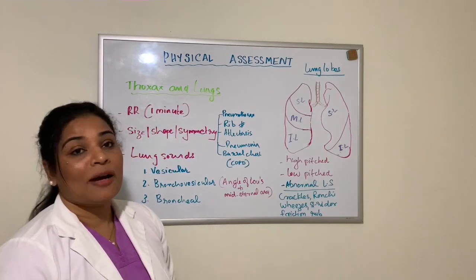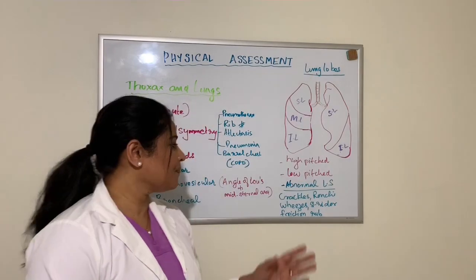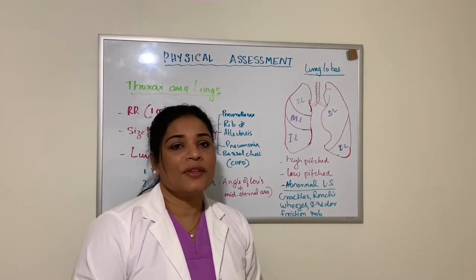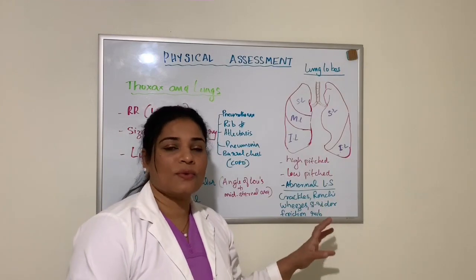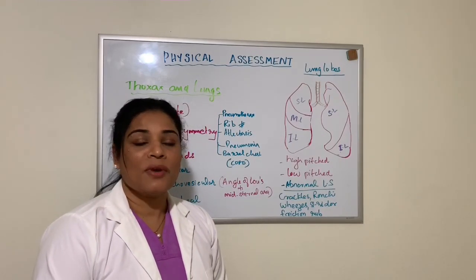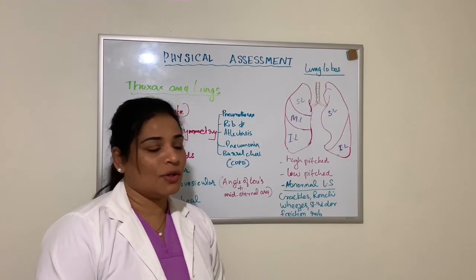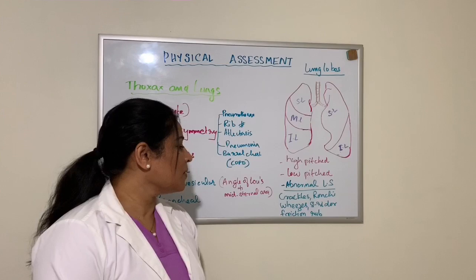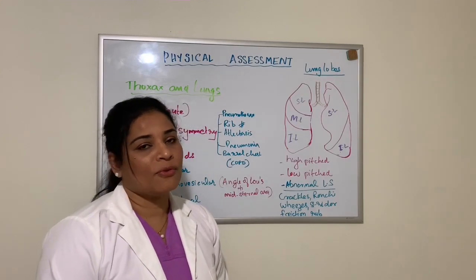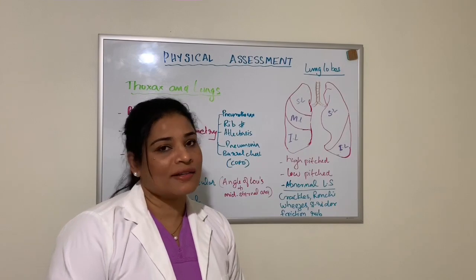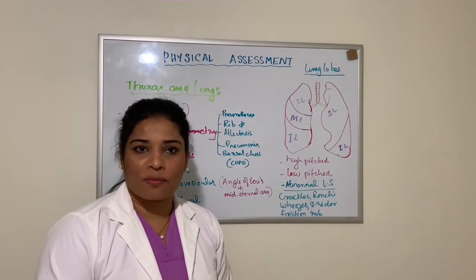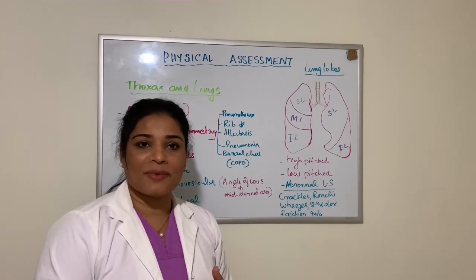The next topic is abnormal lung sounds. Abnormal lung sounds include crackles, rales, wheezes, stridor, and friction rub. There are underlying reasons for these sounds. Immediately after extubation, you may hear stridor. Patients with congestive heart failure or fluid overload may present with friction rub or crackles and rales. Patients with pneumonia and fluid infiltration can have crackles and rales. Whenever a patient has any abnormal adventitious sounds, it is the nurse's responsibility to notify the physician.